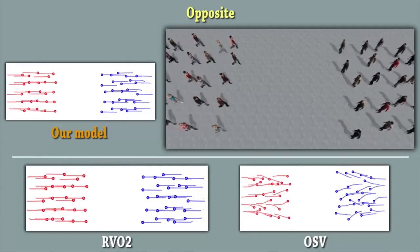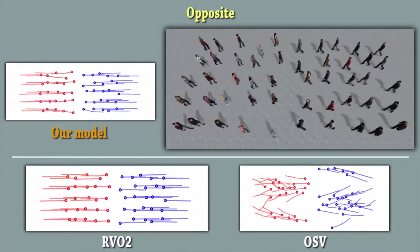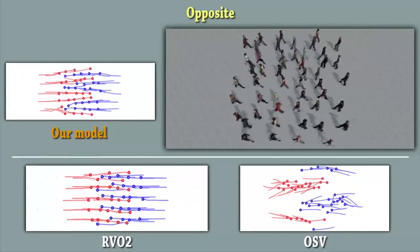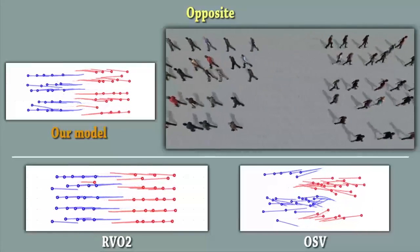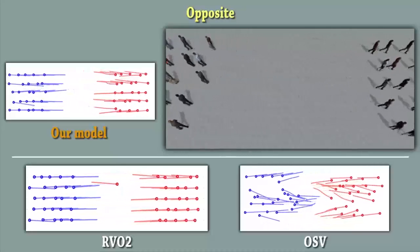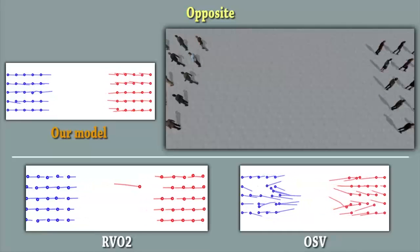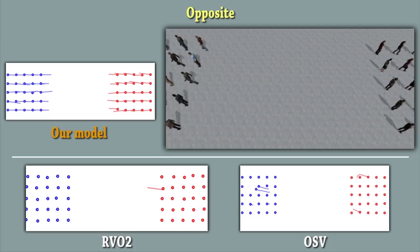In this scenario, we can observe that all models lead to formation of lanes. Nevertheless, OSV presents strong patterns, with lanes very distanced from each other, whereas in RVO, those lanes get very close to each other. Our model provides an intermediate solution. No strong patterns are produced, and at the same time, agents respect the personal space.